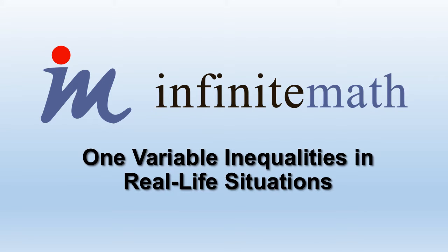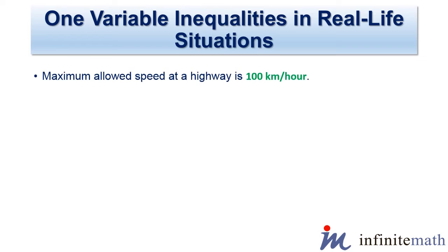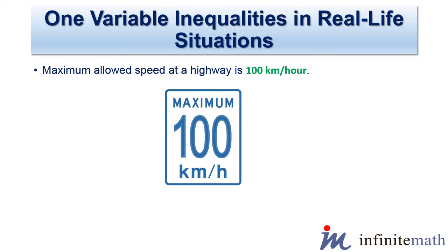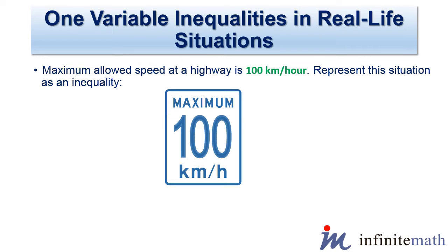One variable inequalities in real life situations. Maximum speed allowed on a highway is 100 km per hour. Represent this situation as an inequality.